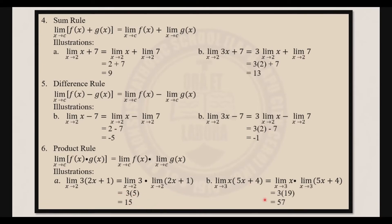Next example: find the limit of x times 5x plus 4 as x approaches 3. That equals the limit of x as x approaches 3 times the limit of 5x plus 4 as x approaches 3. Following the identity rule, the limit of x as x approaches 3 is 3. Following the sum rule, the limit of 5x plus 4 as x approaches 3 is 19. So 3 times 19 is 57.